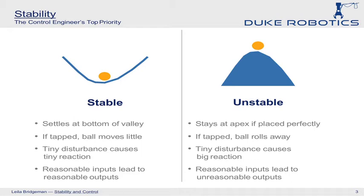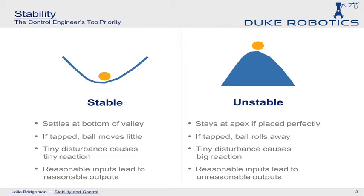Both of those points are equilibrium points — the state we want to keep our system at. But the difference is that if you give even the tiniest nudge to the ball at the top of the hill, it'll roll far away from the equilibrium point. Whereas if you give a little tap to the ball at the bottom of the valley, it'll roll a little bit up the hill and then eventually return back to that equilibrium point. So the ball at the bottom is stable, whereas the ball at the top is unstable because it can respond wildly to just a tiny disturbance. As a control engineer, my top priority is to get the system behaving as if it's the ball at the bottom of the hill, making it want to return to where we want it to be.